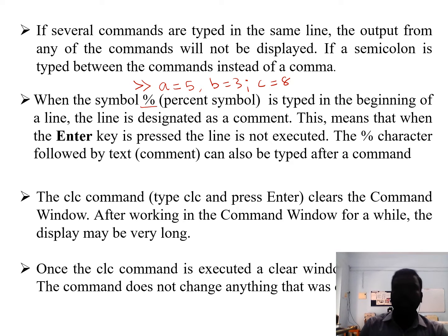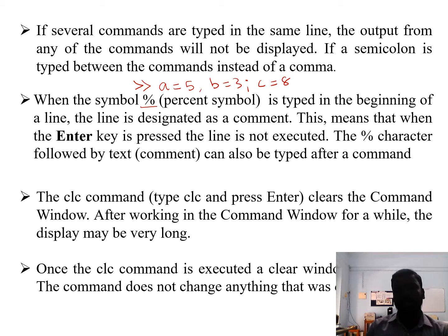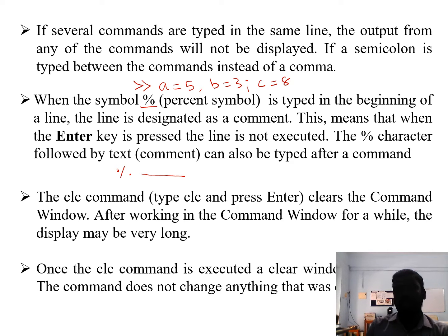The percentage symbol (%) is very useful. When the percentage symbol is typed at the beginning of a line, that line is designated as a comment — when Enter is pressed, the line is not executed. The percentage character followed by text can also be typed after a command. This is useful for labeling programs or noting technical steps for future reference.